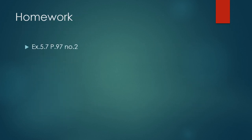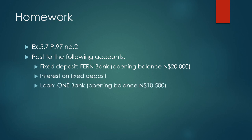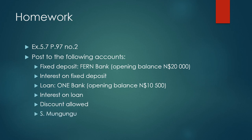Homework: Exercise 5.7, page 97, number 2. Post to the following accounts: Fixed deposit at Fern Bank with an opening balance of $20,000; Interest on fixed deposit; Loan at one bank with an opening balance of $10,500; Interest on loan; Discount allowed; S. Mungungu's account in the debtors ledger; and C. Mubasu's account in the debtors ledger. The other opening balances you will find on page 97. Good luck and stay safe.